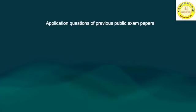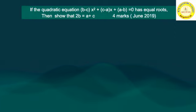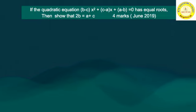This is an application question from previous public examination papers. The chapter is quadratic equations. The problem: if the quadratic equation (b minus c)x² plus (c minus a)x plus (a minus b) equals 0 has equal roots, then show that 2b equals a plus c. This problem came in June 2019 as a four-mark question.